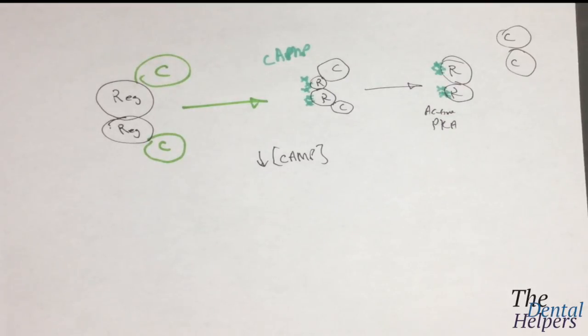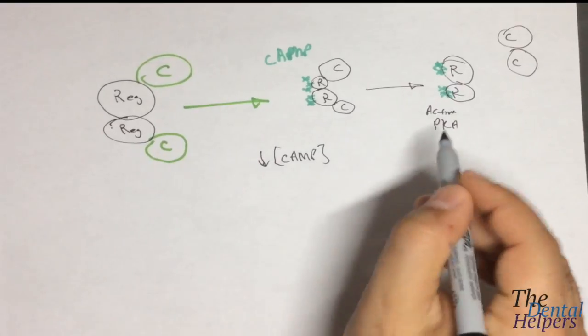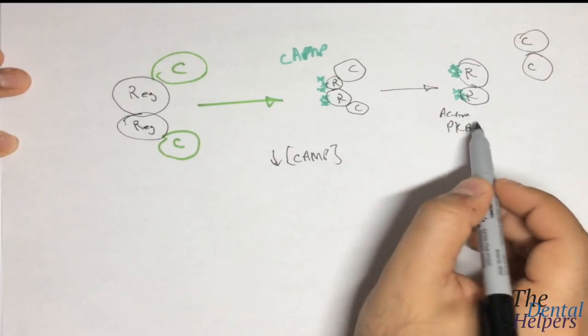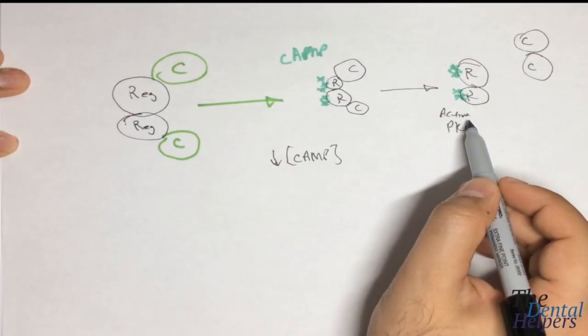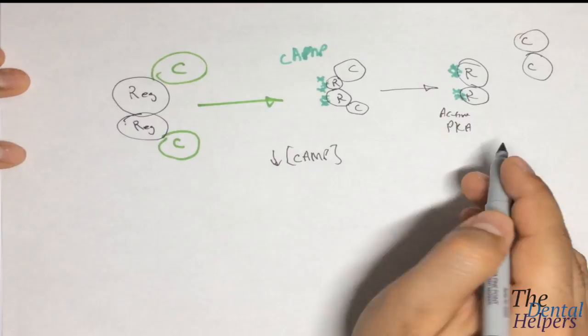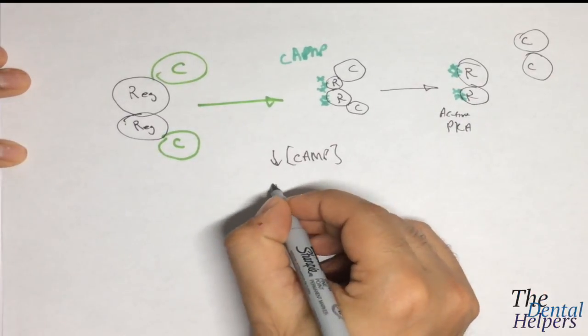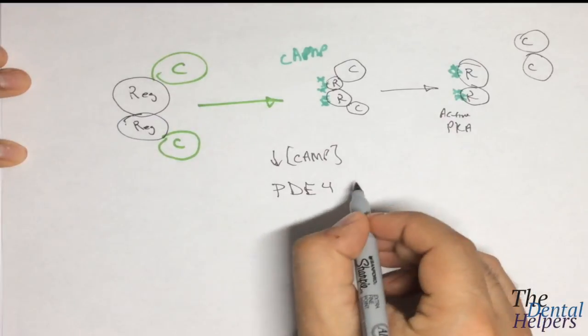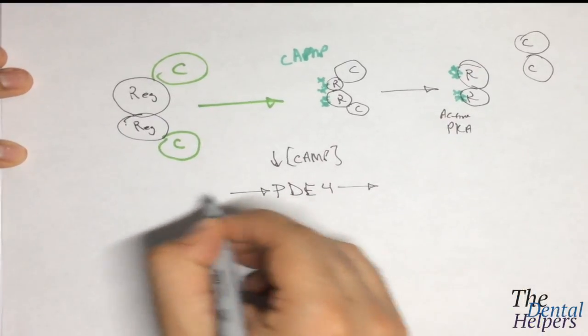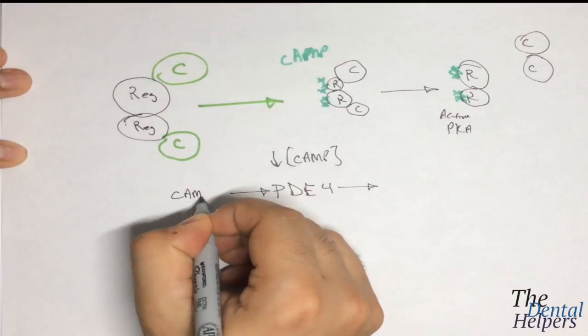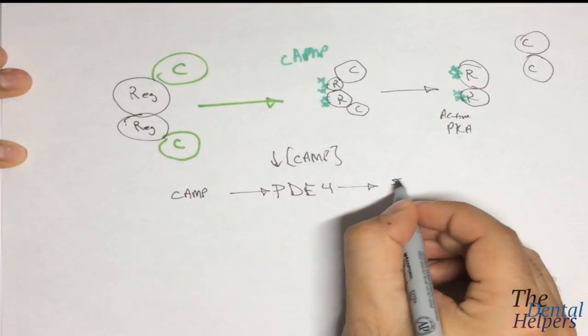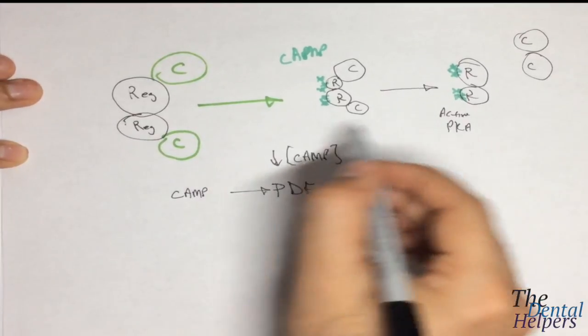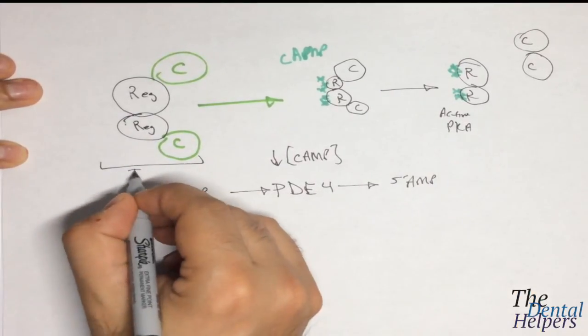And just so you remember, once we've produced enough active PKA and we want to return back to normal, what we're going to use is phosphodiesterase 4. And this is going to basically convert the cAMP into 5' AMP. And then we're going to basically return back to this inactive state.